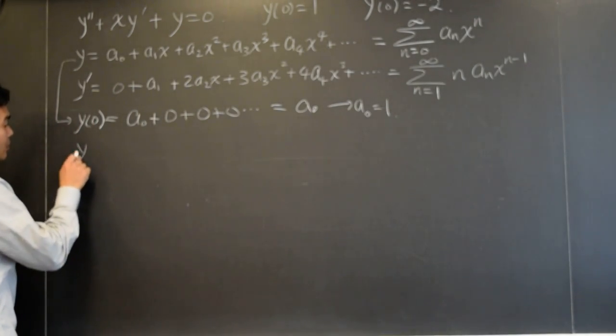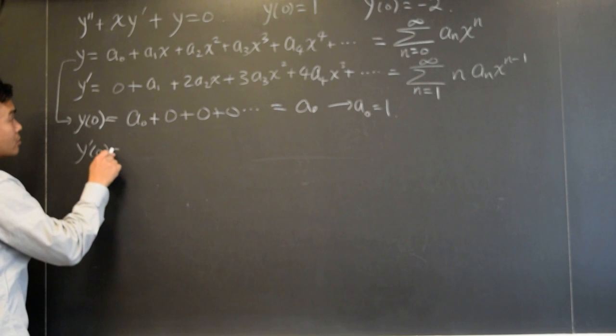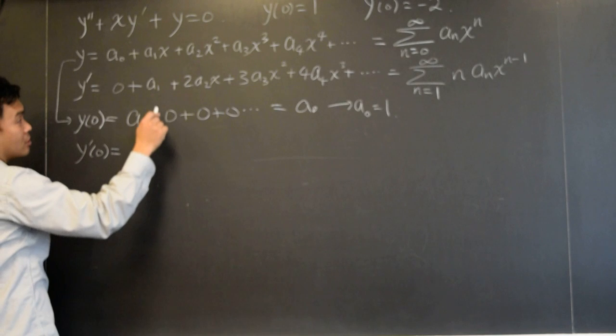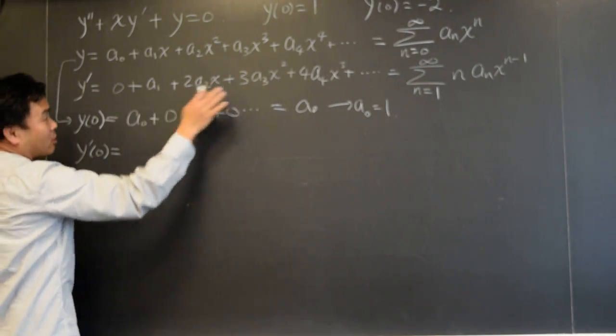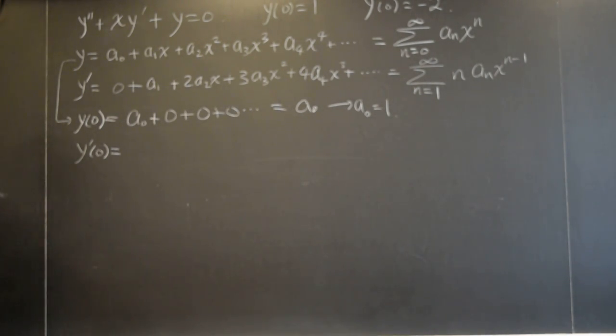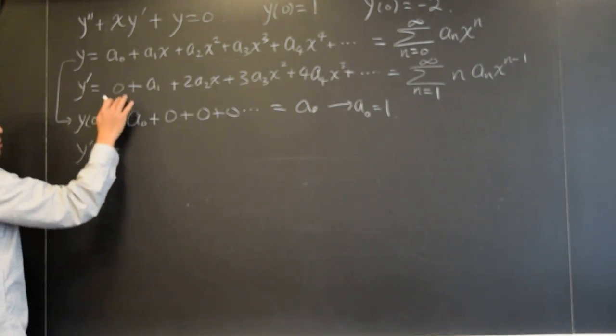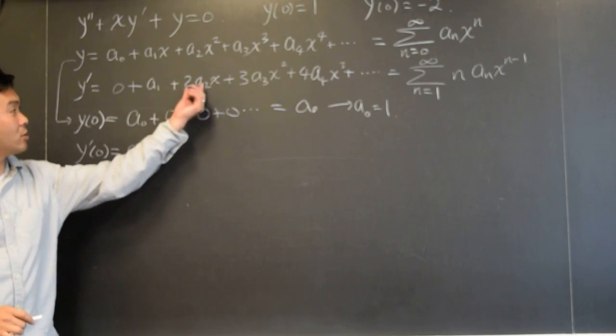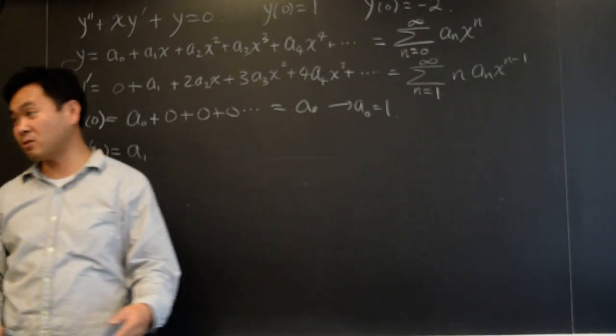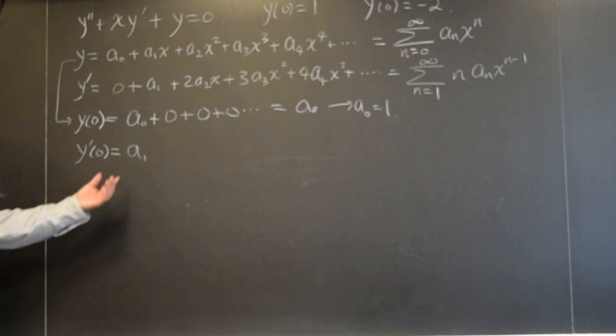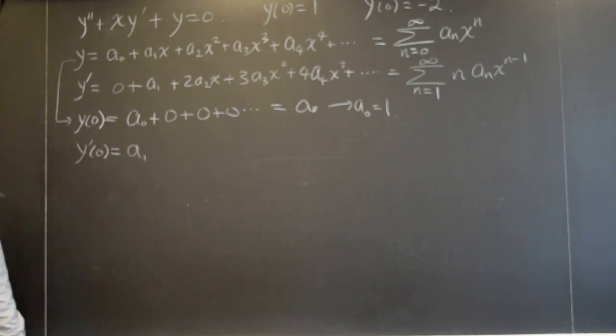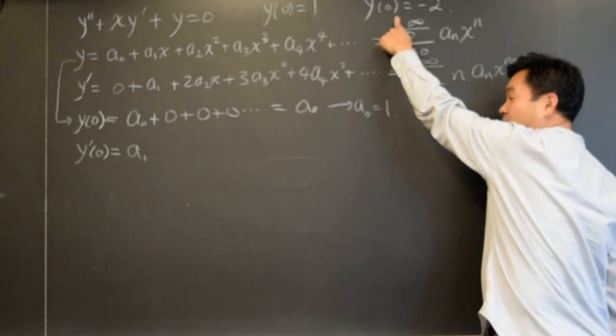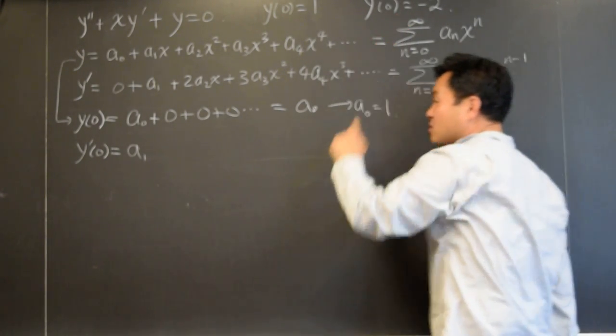Now let's do the same thing for y prime of zero. If you have y prime as negative two, if you plug in zero here, what would you get? Over here. A one. A one is the only thing that you can get, right? Zero, zero, zero, everything is zero. A one is the only non-zero term you get. But look at this one. What does this mean? A one equals negative two. A one equals negative two.